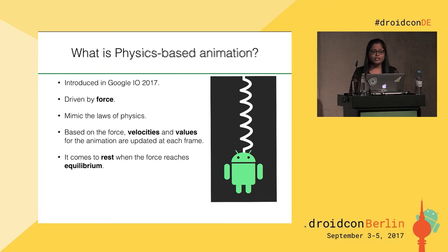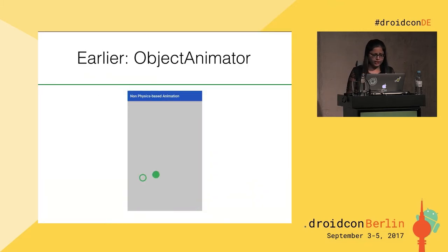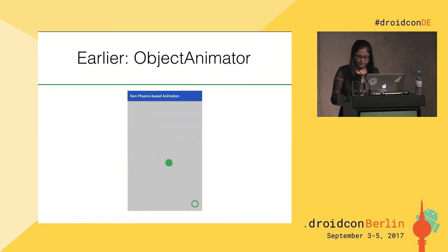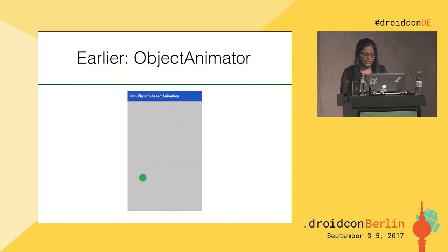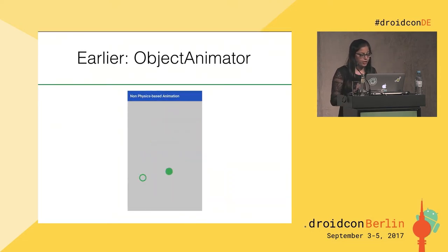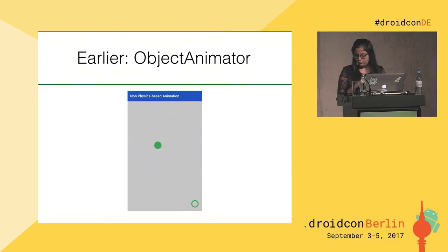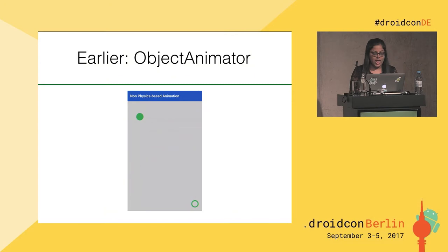Before physics-based animation, we had object animators, animator-based animation. Animator-based animations are fairly static and have a fixed duration. In a scenario where the target value needs to change during the animation, to accommodate that change, we need to cancel the animation at the time of target value change and reconfigure the animation with the current value as the new start value and add the target value. Because of this process, it creates an abrupt stop in animation and this doesn't look natural.